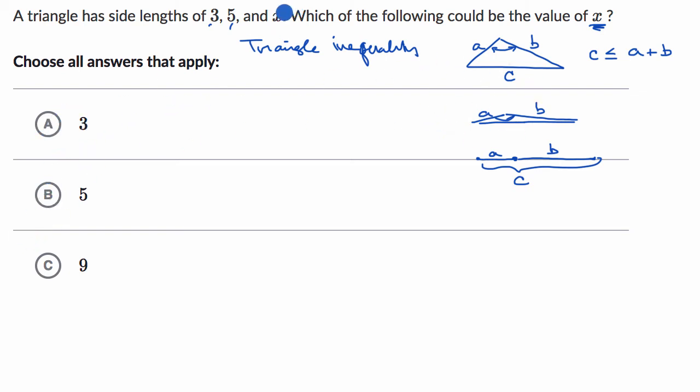So choice A would make x a three. So we'd have a three, a five, and a three. So our side lengths would be three, five, and three. And we could try to visualize that.